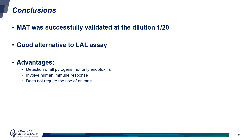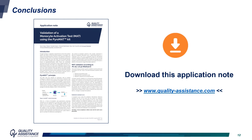In conclusion, we were able to successfully validate the monocyte activation test when the sample is 24-fold diluted. This test has been shown as a good alternative to the LAL assay for the detection of endotoxins. Moreover, the monocyte activation test has additional advantages: it allows for the detection of non-endotoxin pyrogens, it involves a human immune response mechanism, and it doesn't require the use of animals. Finally, if you wish to access more information on the monocyte activation test, an application note is available for download on our website.